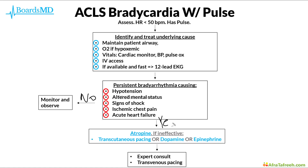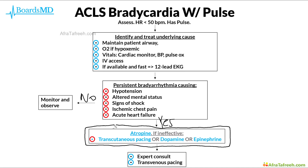However, if the answer is yes, then we start by giving atropine 0.5 milligrams. If this is ineffective, we can go up to repeated doses of 0.5 milligrams up to 3 milligrams total. If still ineffective, we can resort to transcutaneous pacing, and we can also utilize dopamine or epinephrine. The final step is to get an expert consult — in this case cardiology — as well as in some cases transvenous pacing. For exam purposes, focusing on the atropine and transcutaneous pacing is really where the bulk of the action is for maximizing your scores.